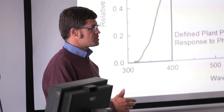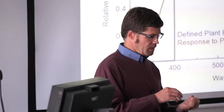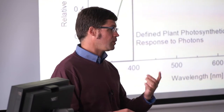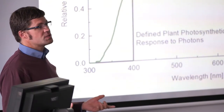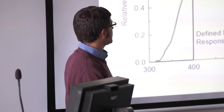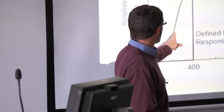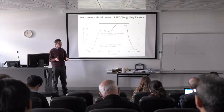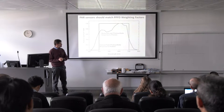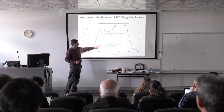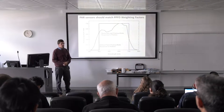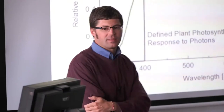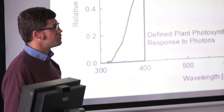The data that McCree and others measured for single leaves was in the laboratory, under controlled conditions and a low light environment. A more useful and universal definition of photosynthetically active radiation is rather than trying to weight measurements by that green line, we just assume that all photons between 400 and 700 nanometers are equally efficient at making photosynthesis happen. The universally accepted definition of PAR is what we call the defined plant photosynthetic response — equal weight given to all photons within the 400 to 700 range and no weight given to photons outside it.